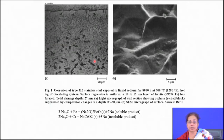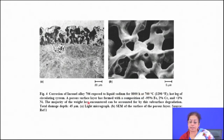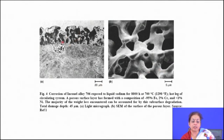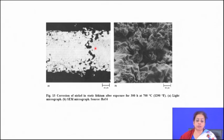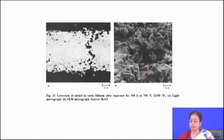New materials must be chosen for the carrying purpose to avoid overall loss of the component. For Inconel alloy 706 exposed to liquid sodium for 8000 hours at 700°C in a circulating system, a porous sulfur layer has formed. In the cross-section, the porosity content is so high that it is often interconnected, meaning the component will fail much faster when subjected to tensile stress. Similarly, nickel in static lithium at 700°C for 300 hours also shows highly interconnected surface porosities.